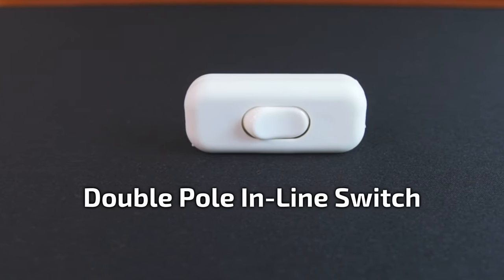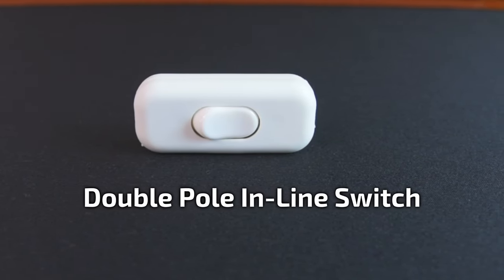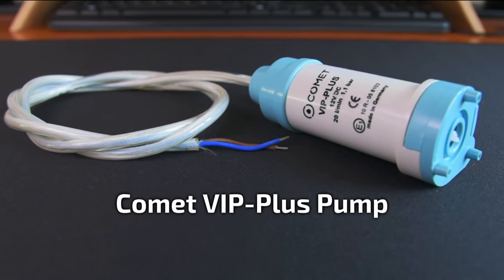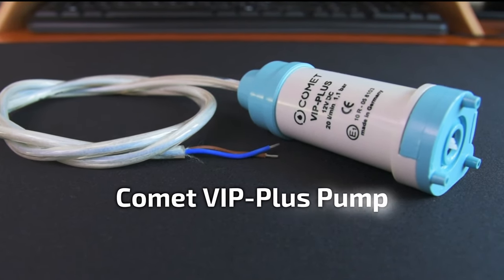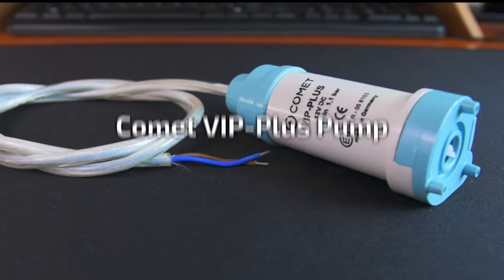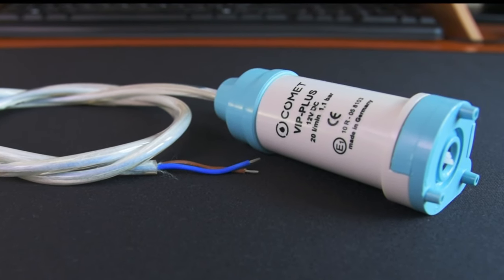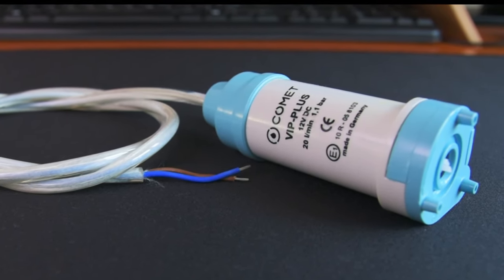To turn the power on and off I chose a double pole inline rocker switch. The pump is a bit of an extravagance. This one is a VIP plus which is made by Comet. It's a submersible pump and units like this are usually found in caravans and motor homes.